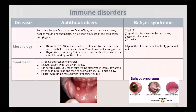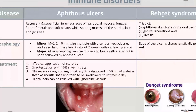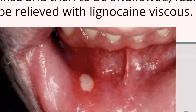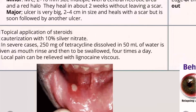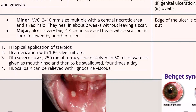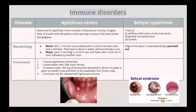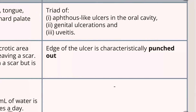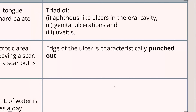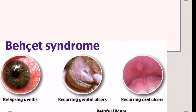For immune disorders, we have aphthous ulcers and Behcet's disease. Aphthous ulcers are recurrent superficial painful ulcers with a central pale base. They can occur on the soft palate, hard palate, or gingiva. Minor aphthous ulcers are most common — small, multiple, with necrotic centers. Major aphthous ulcers also exist. Behcet's disease is a triad of oral ulcers, genital ulcers, and uveitis. Treatments for aphthous ulcers include topical steroids, cauterization, and local pain relief agents.